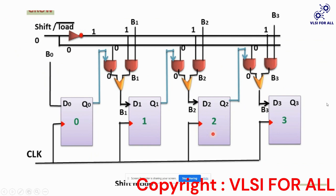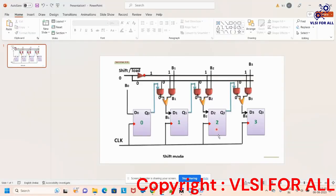We want to perform the operation of parallel input and serial output, which means first we have to load the data parallelly into the flip-flops and then serially get the output. To get the output serially, first we need to load the data parallelly — for that we will use the load bar. After loading, we need to get the output in a shift manner, that is serial output. When load is zero, the data is loaded into the flip-flops, and when load is one, data is shifted from one flip-flop to the other.